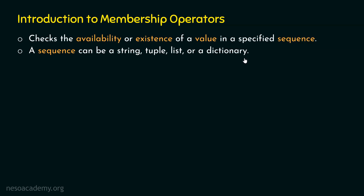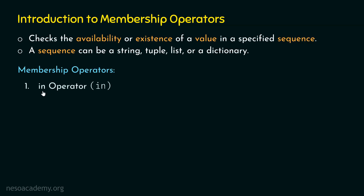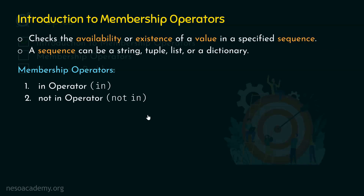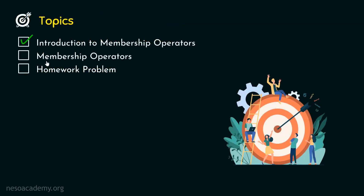In Python, we have two different types of Membership Operators. The first type is the In Operator, which is denoted by 'in'. The second type is the Not In Operator, which is denoted by 'not in'. Let's move on to the next topic, which is Membership Operators.